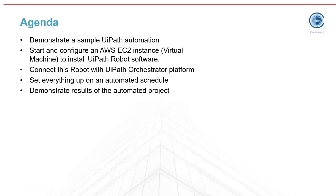Then I'll move over to AWS to spin up a new EC2 instance. We'll install the UiPath robot software onto that machine, which will allow it to run the process. We'll then connect this robot to our UiPath Orchestrator platform, which we can use to trigger the process to run remotely.